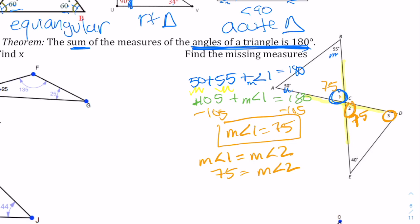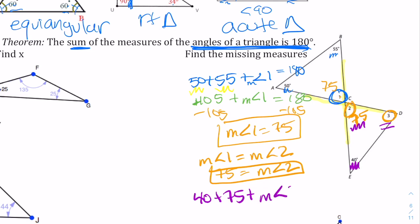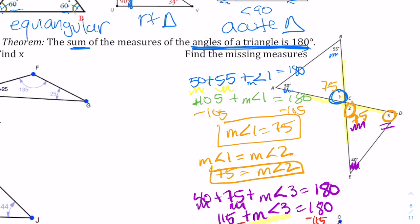Next we need the measurement of angle three. We've got two of our three needed pieces of information for this triangle, and we know there are 180 degrees in a triangle. So I can do 40 plus 75 plus the measurement of angle three equals 180 degrees. Adding the like terms: 40 and 75 gives us 115 plus the measurement of angle three equals 180. Subtracting 115, we get that the measurement of angle three is 65 degrees.